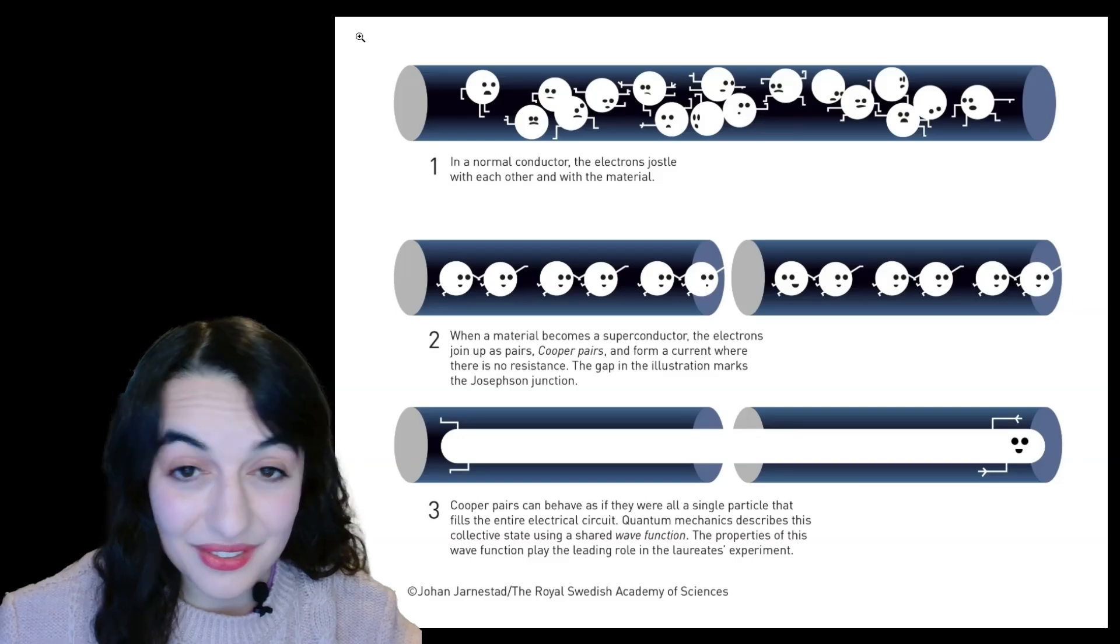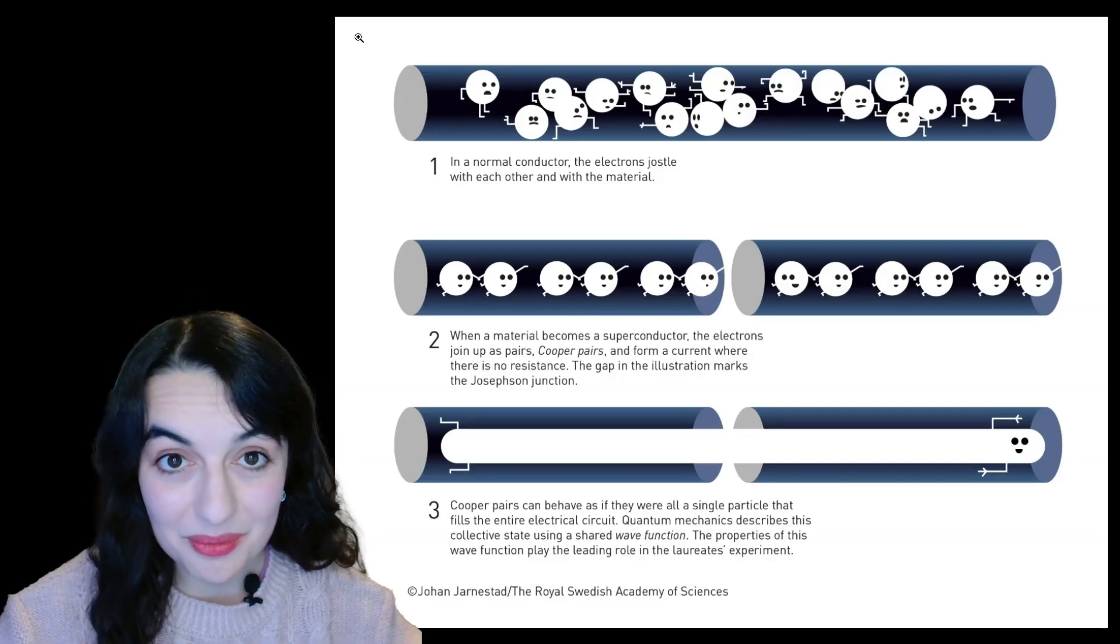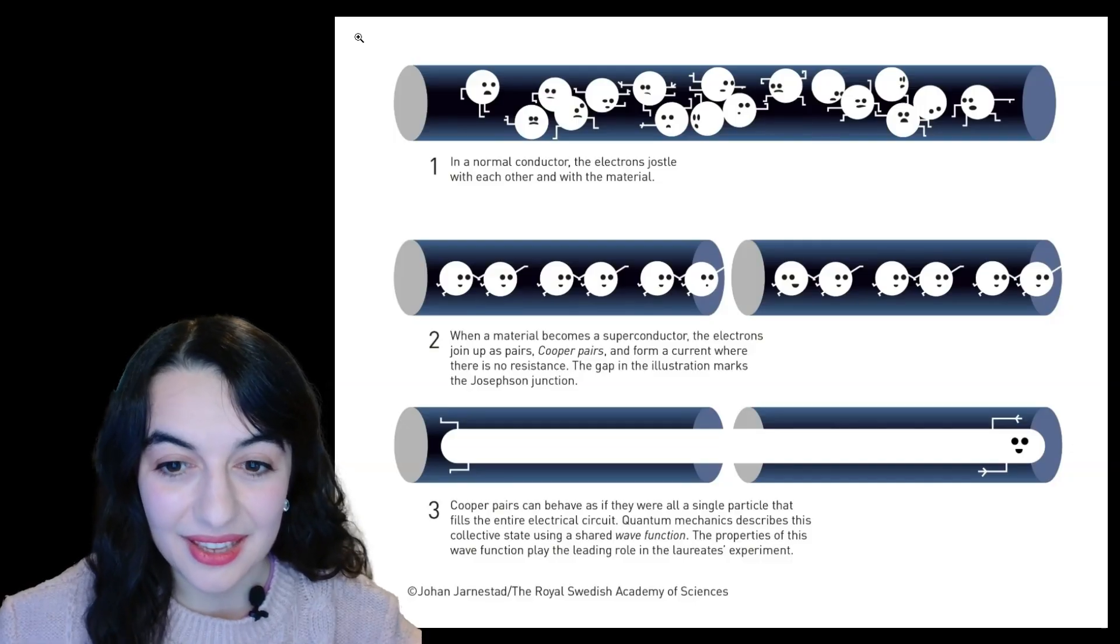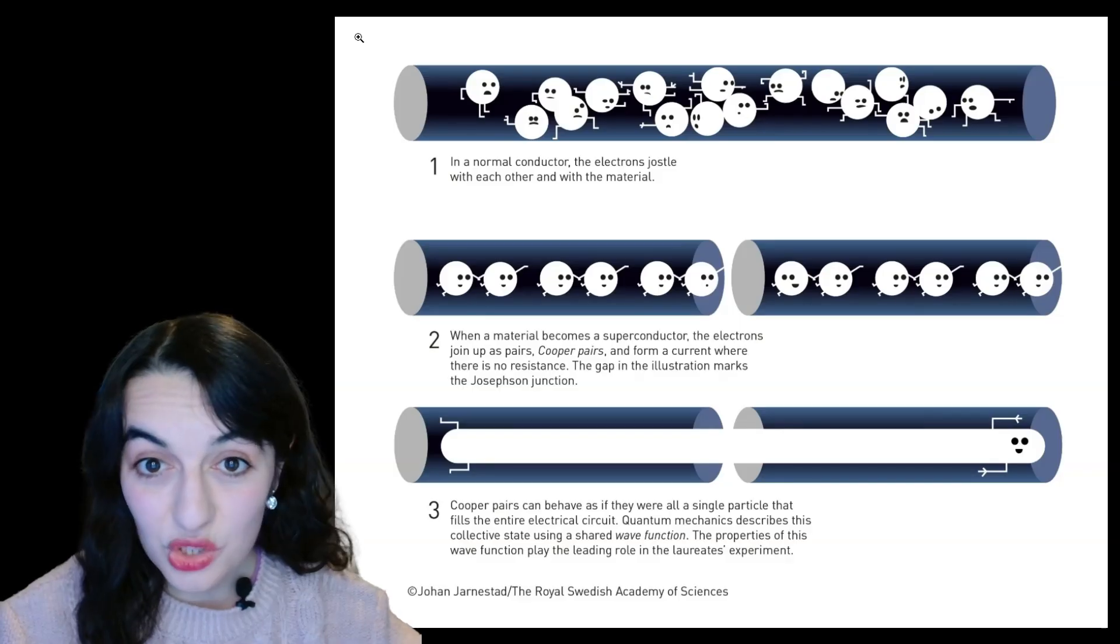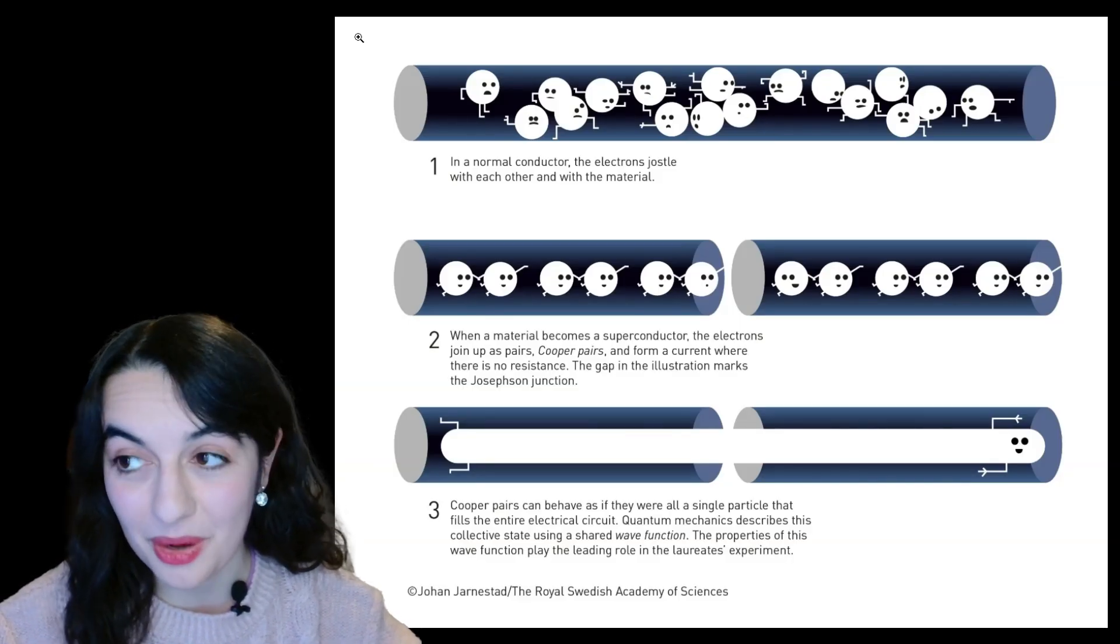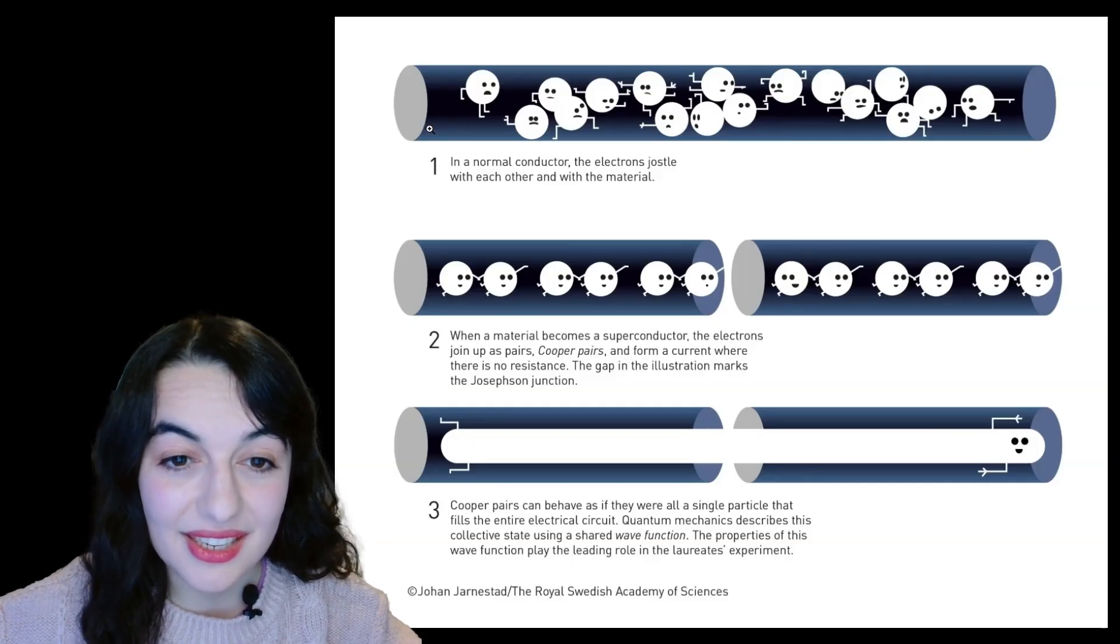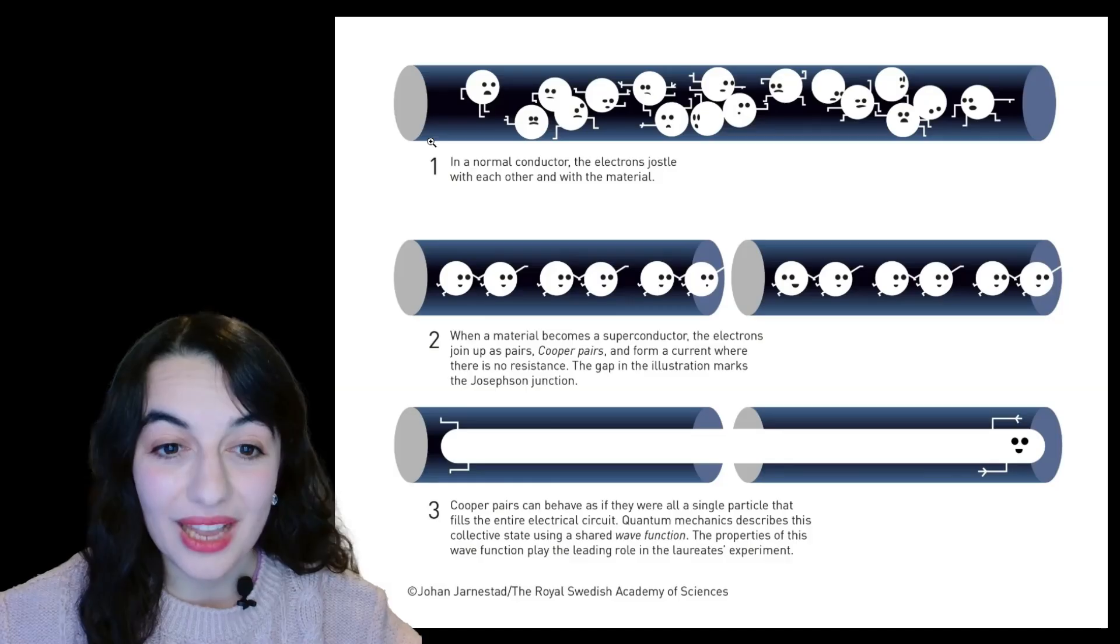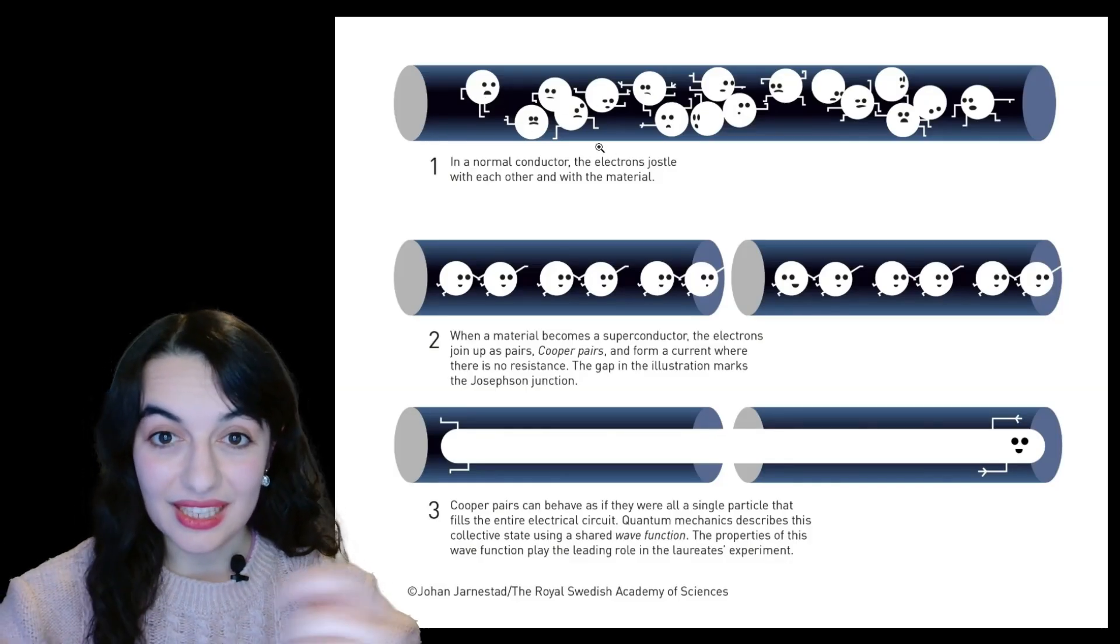I quite liked this figure from the Nobel Prize materials on this topic. What you can see here is a figure depicting what's happening in the superconducting Josephson junction that these Nobel Prize winning experiments were done using. This first image is showing a normal conductor, not a superconductor, where you have the electrons all kind of individually bumping about.